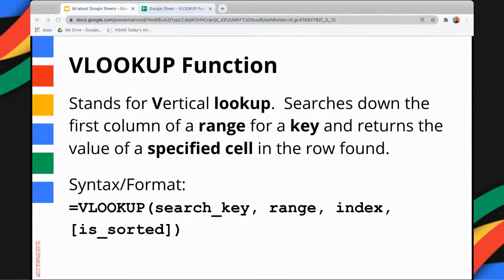To make use of it, we start with an equal sign followed by the function name and a pair of parentheses. Inside the parentheses, there are four arguments separated by a comma, and these are: search key, range, index, and is sorted.